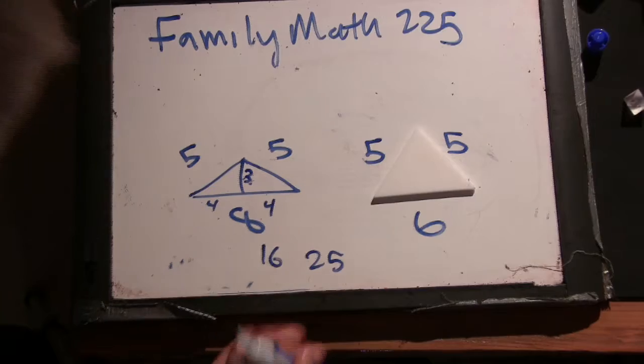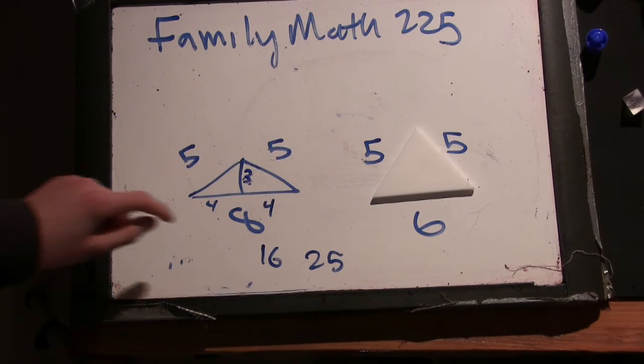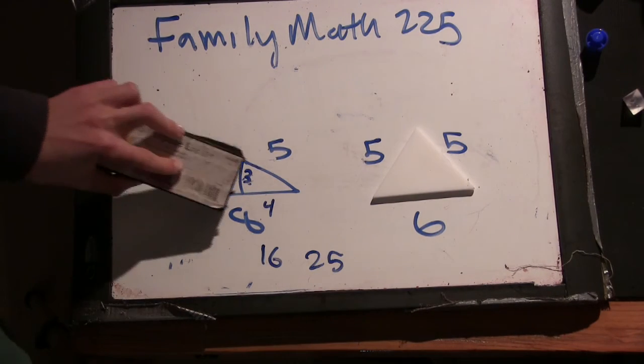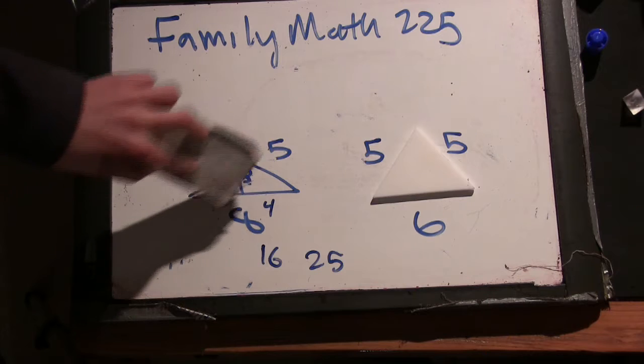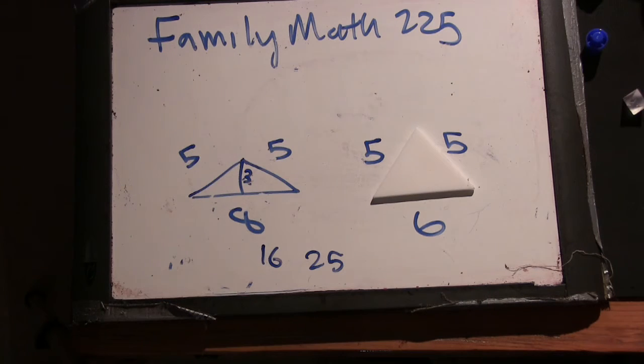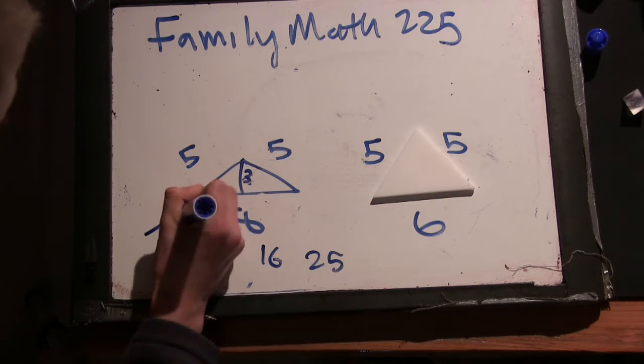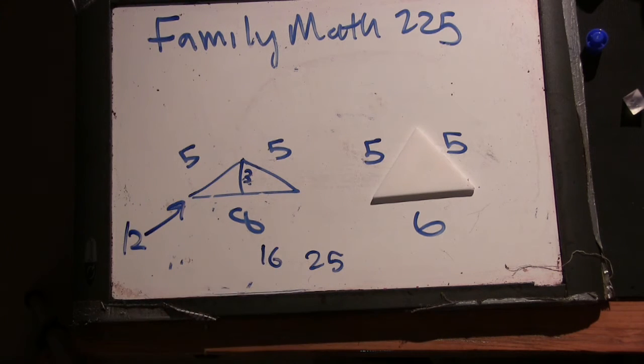So, we now know this length is 3. Okay. Now, we can just do 1 half, 8 times 3, that's 24, but divided by 2, so this triangle has area 12. Good job.